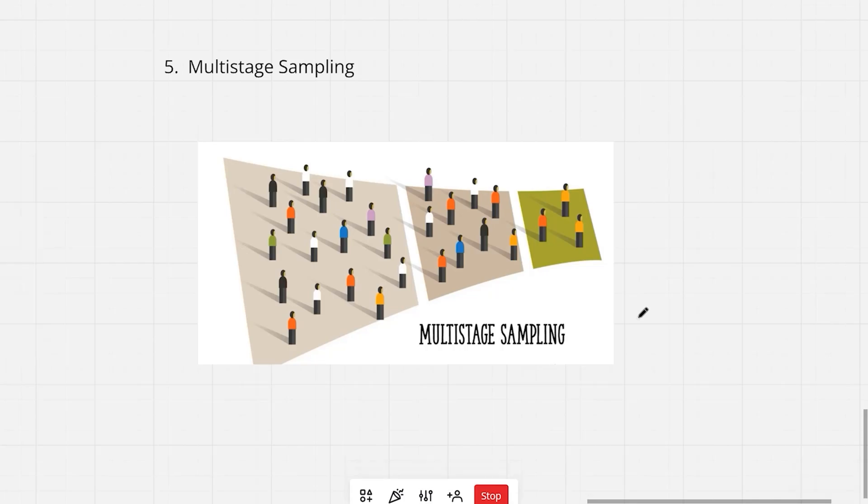Moving on to the next sampling method which is multi-stage. Multi-stage sampling is like breaking a big task into smaller steps to make it easier. Instead of randomly selecting your entire sample from a huge population all at once, we are going to do it in stages. Each stage is going to narrow things down a bit more.